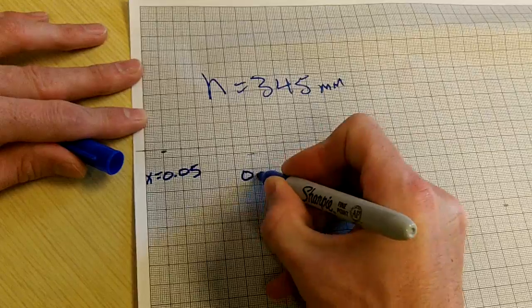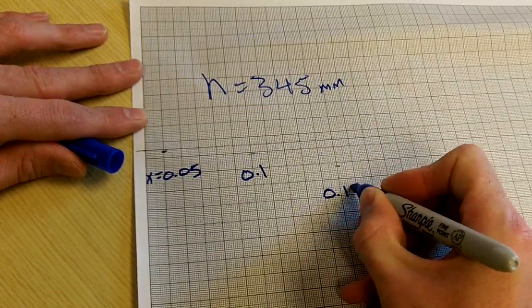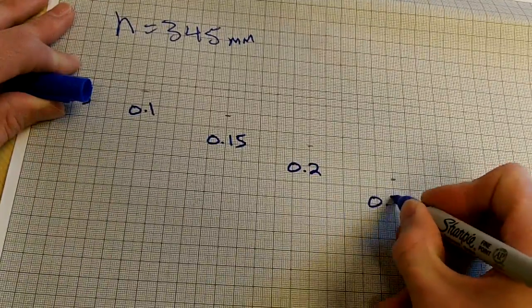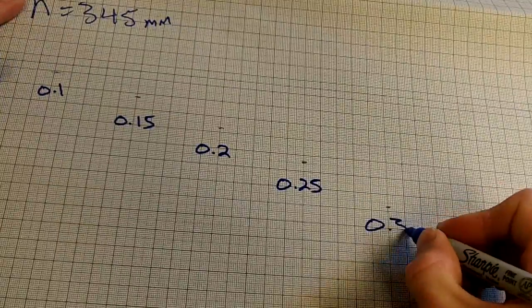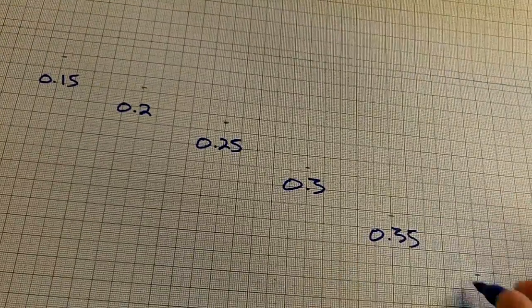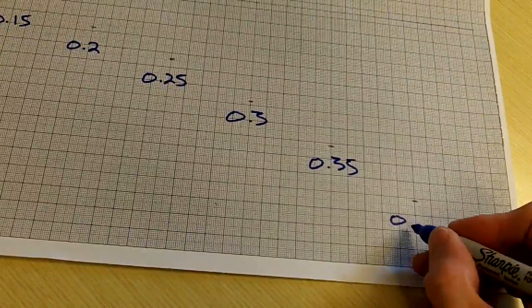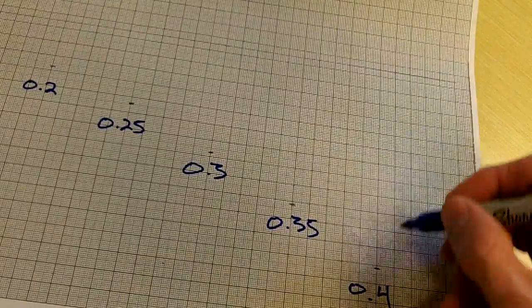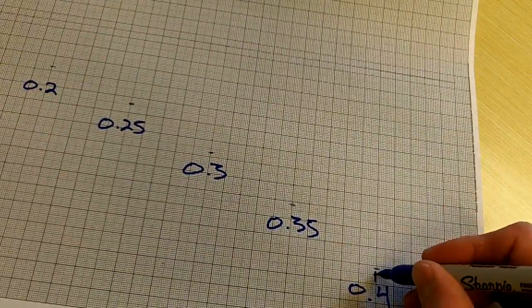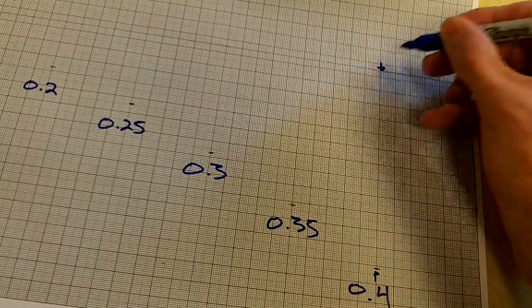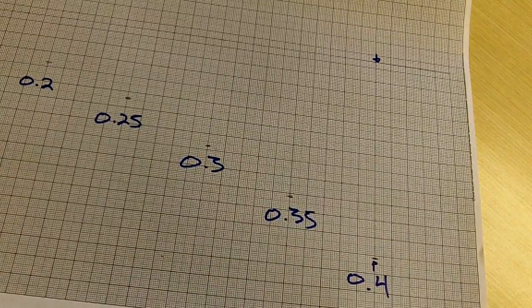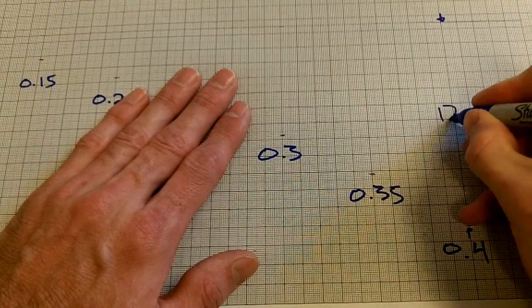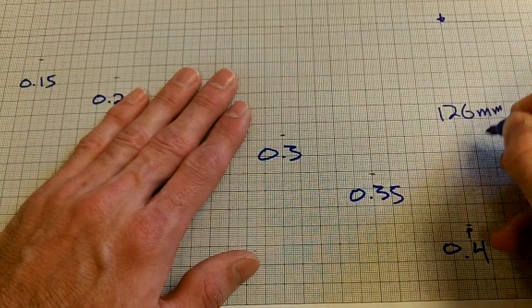...0.15, 0.2, 0.25, 0.3, 0.35, 0.4. And so I want to measure what is the distance for each of these - the vertical distance that I'm going to report. Okay, I just measured it and it's 126 millimeters here.